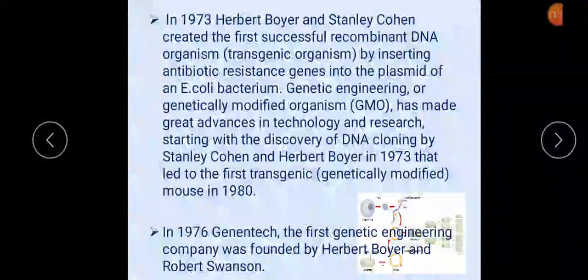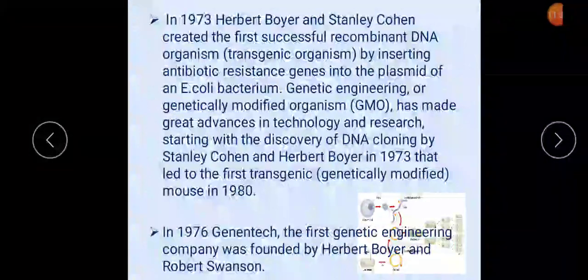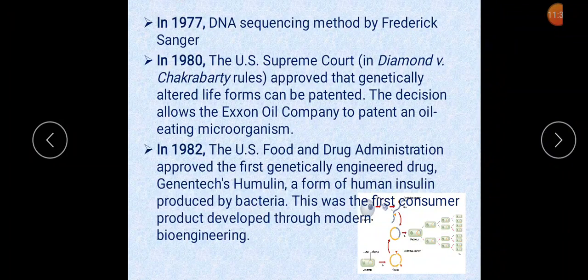Other commercialized products include vaccine production, GloFish to help detect environmental pollution, flavored tomato, golden rice, GM potato, soybean, and BT corn. In 1977, a DNA sequencing method by Frederick Sanger was developed.